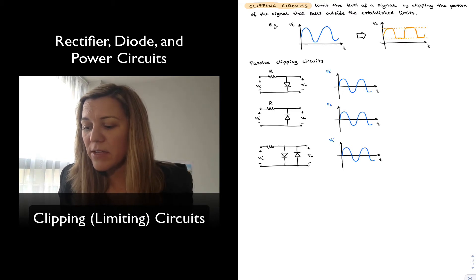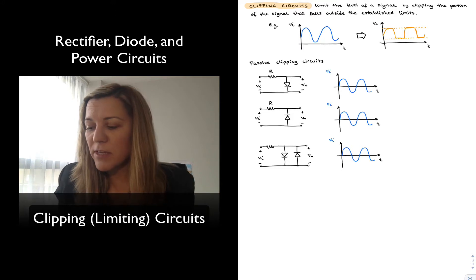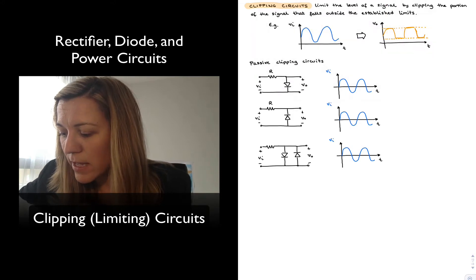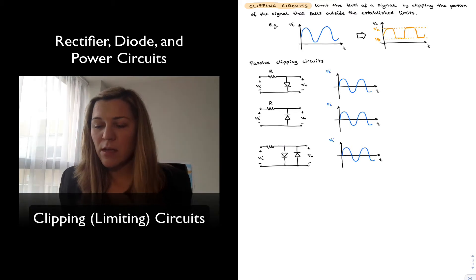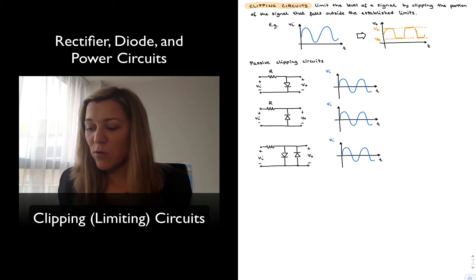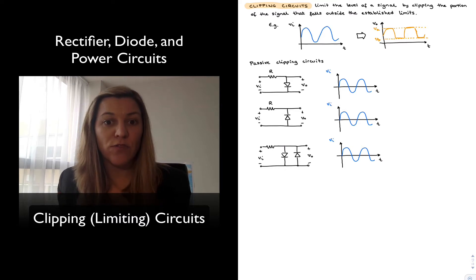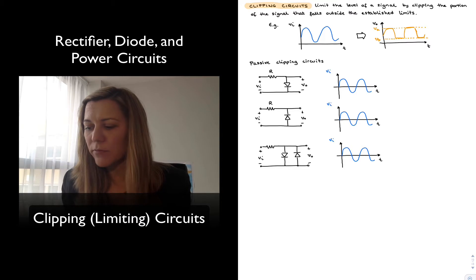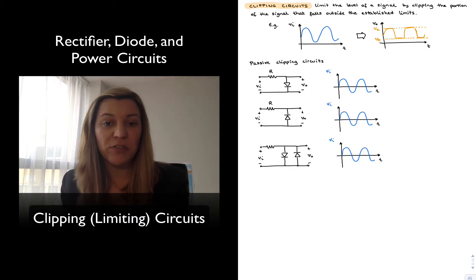An example of that is shown here where I have a sinusoidal input signal, and let's imagine that I wanted to establish two limits, which I can label VA and VB, my upper and lower limit. Basically, in between those limits the input signal will be unaltered, but once it reaches one of those values and continues to increase beyond them, the output will just stay flat at those values, and so it alters the shape of the signal.